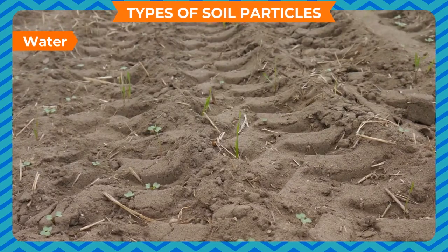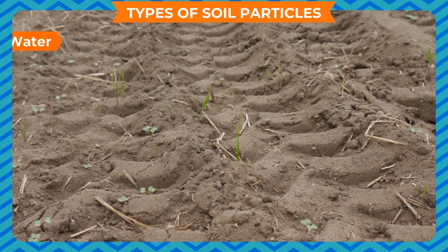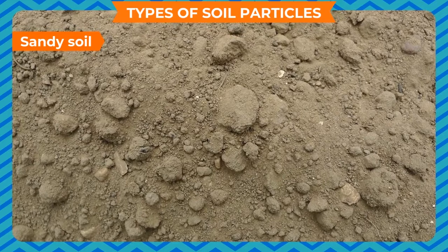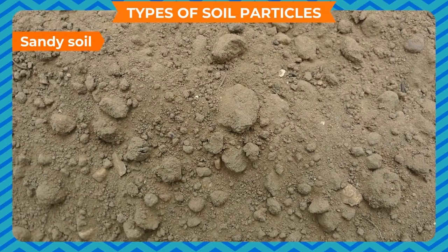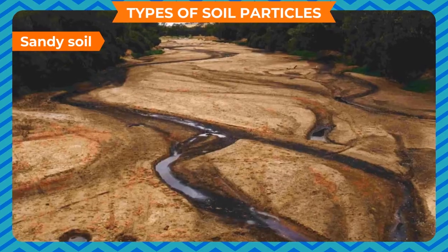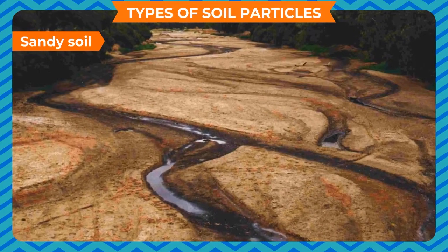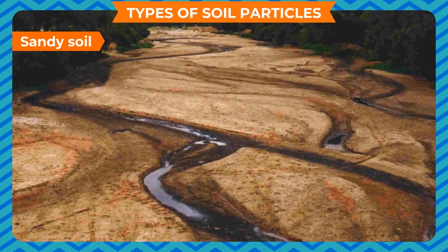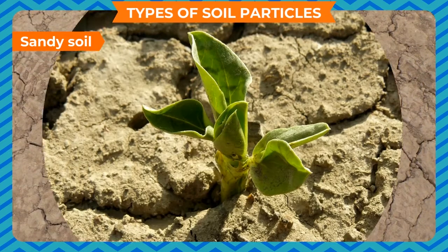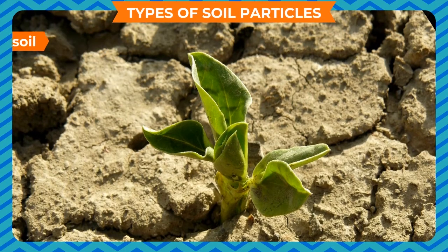Based on the proportion of various particles, soils can be classified into types. Sandy soil has a lot of sand and very little silt and clay. It cannot hold much water as water drains quickly through the large spaces between sand particles. It is found in deserts and is not suited for the growth of plants.